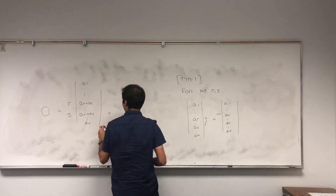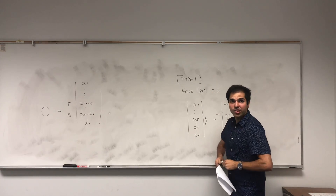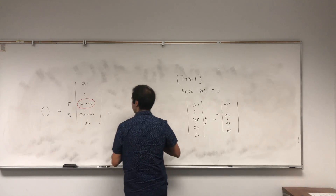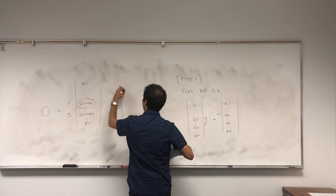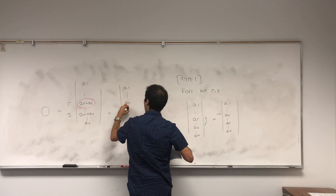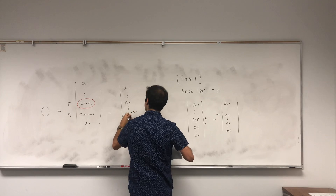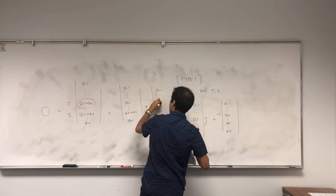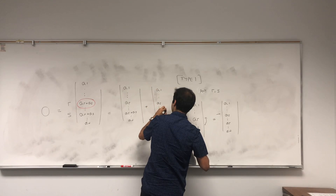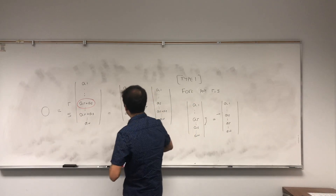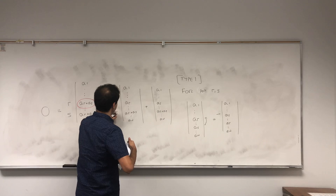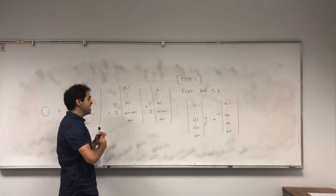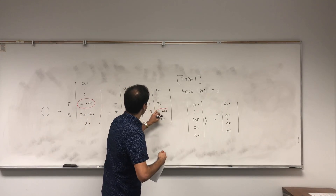Now we need another fact: even though the determinant is not linear overall, it is linear in every row. So in particular, it is linear in this row. Therefore, this becomes: det(A1, ..., AR, AR+AS, ..., AN) plus det(A1, ..., AS, AR+AS, ..., AN), where both involve the Rth and Sth rows.